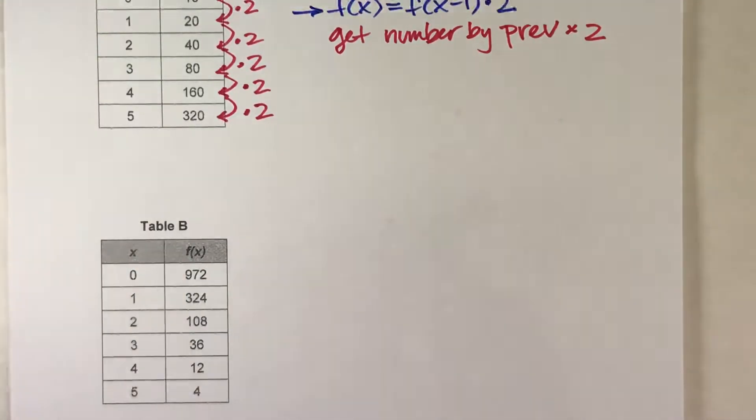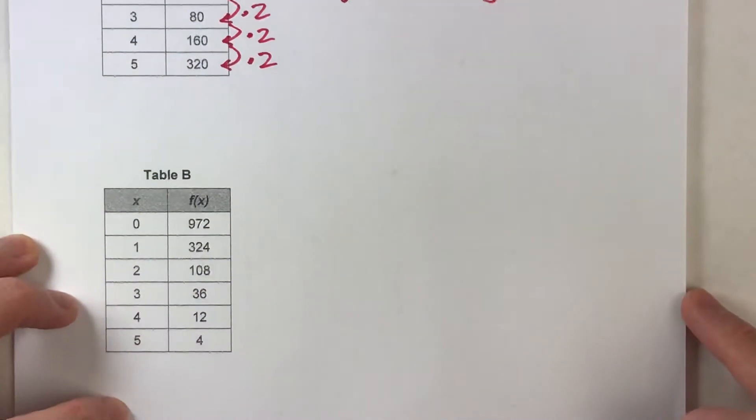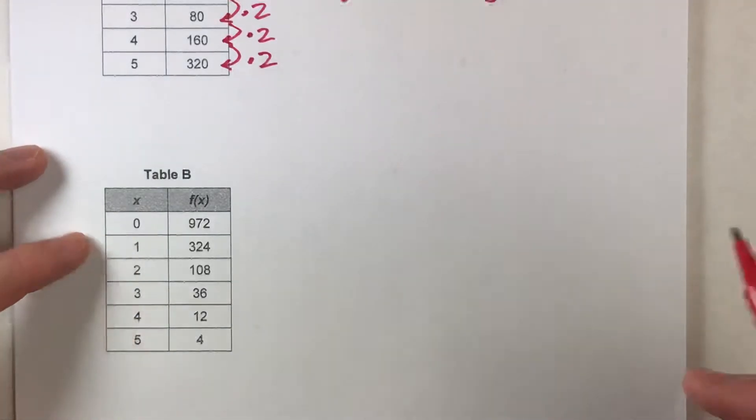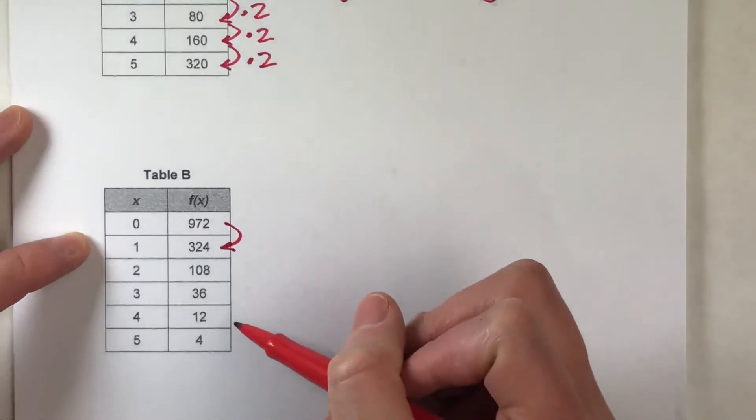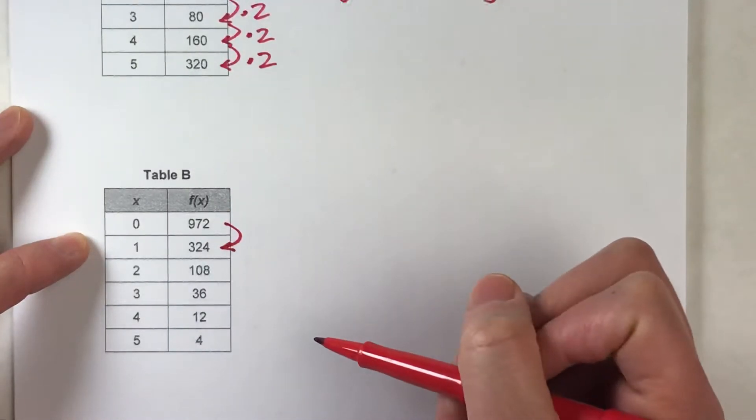So, table B. For this table, x is increasing by one each time. But notice f of x this time is getting smaller. In fact, it's repeatedly dividing by three.